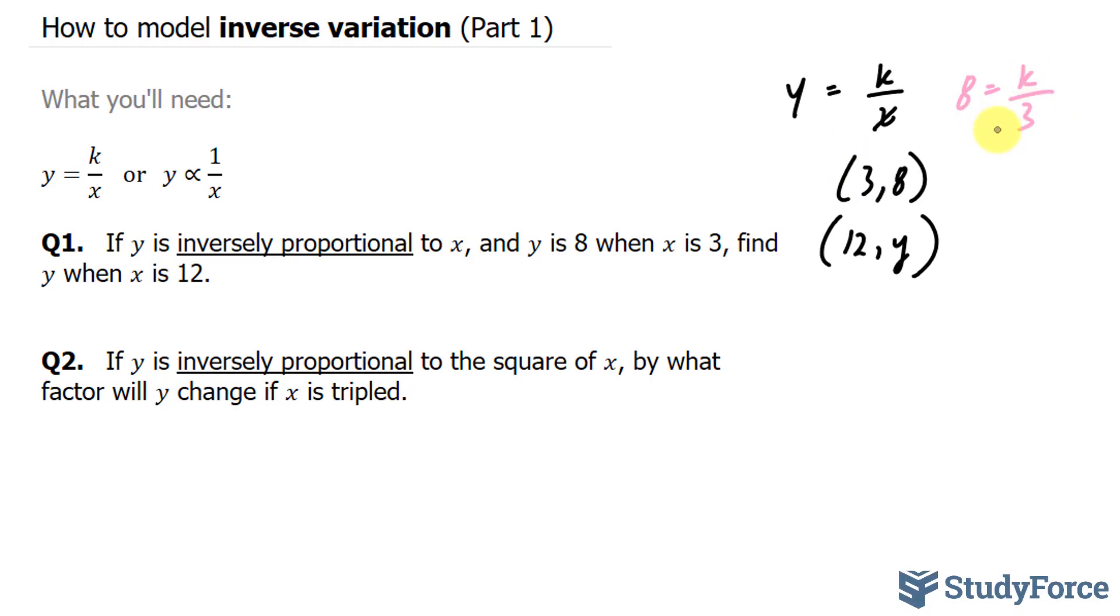Solving for k, we multiply both sides by 3. This 3 and this 3 cancel out, leaving us with 3 times 8, and that is equal to k as 24. Substituting 24 back into our equation, y is equal to 24 over x.